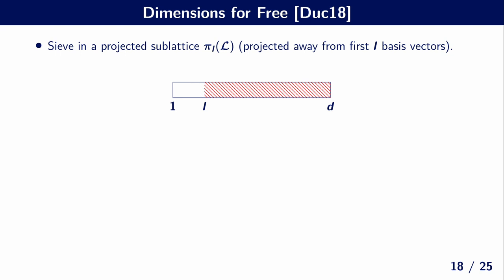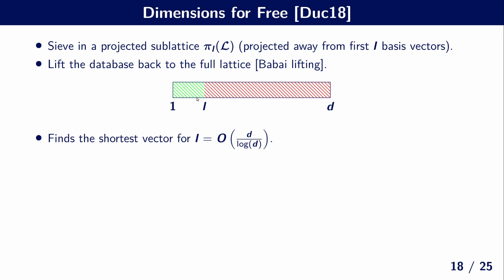So we have discussed the core parts of our implementation, but now discuss some of the more advanced parts. Namely, one of the techniques that is very important in practice is the dimensions for free technique. So instead of sieving in the full lattice, we only sieve in a projected sub-lattice, that's projected away from the first, say, L basis vectors. So we only sieve in this part. And then, after sieving, we have a big list of short vectors in this context. And then we lift it back to the full lattice using Babai lifting. And because you have this many vectors, you can show that you can still find the shortest vector of the original lattice for L that is about D over log D.